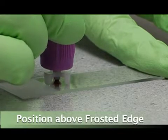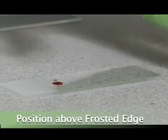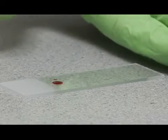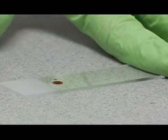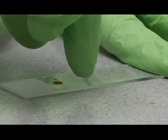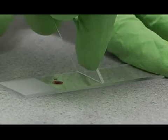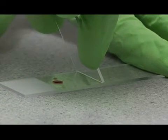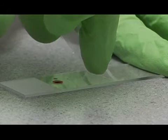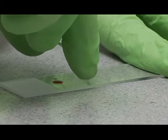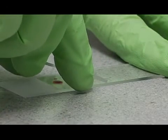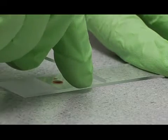Now place a drop on your slide. That's a good size drop there. Take your spreader slide. Now your first slide was a little too thin. You can make it thicker by increasing the angle like this. If it was too thick, you can make it thinner by decreasing the angle like this.